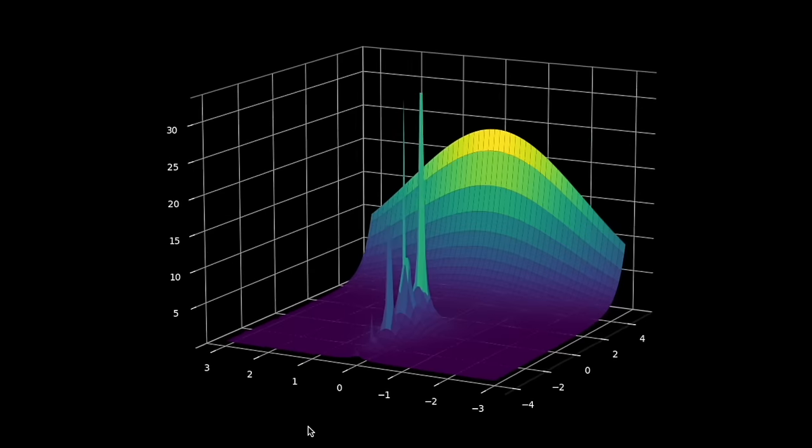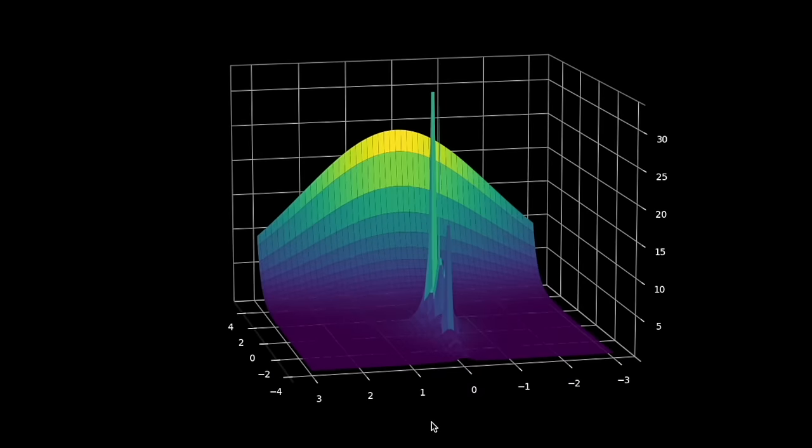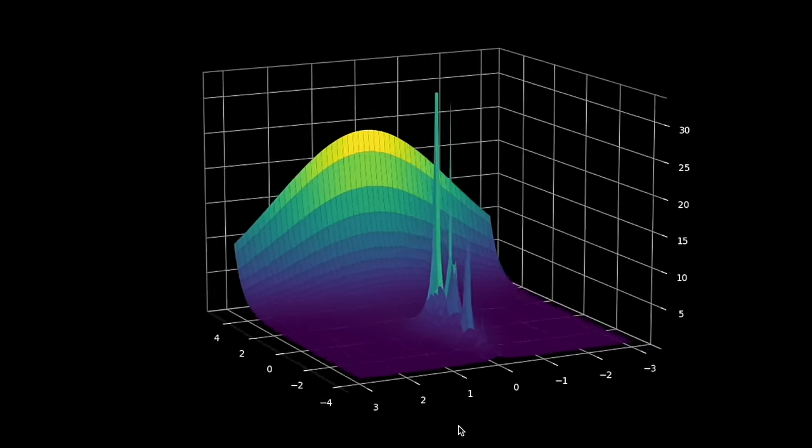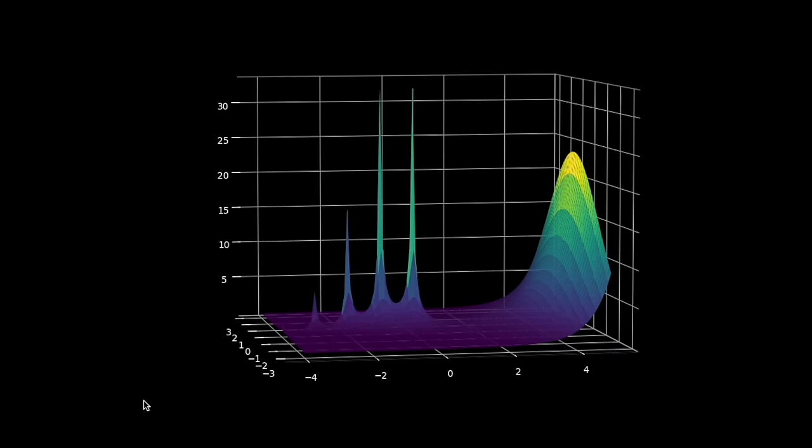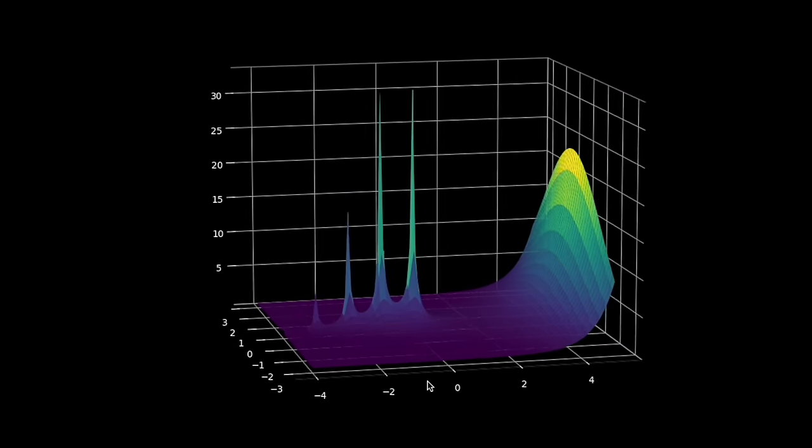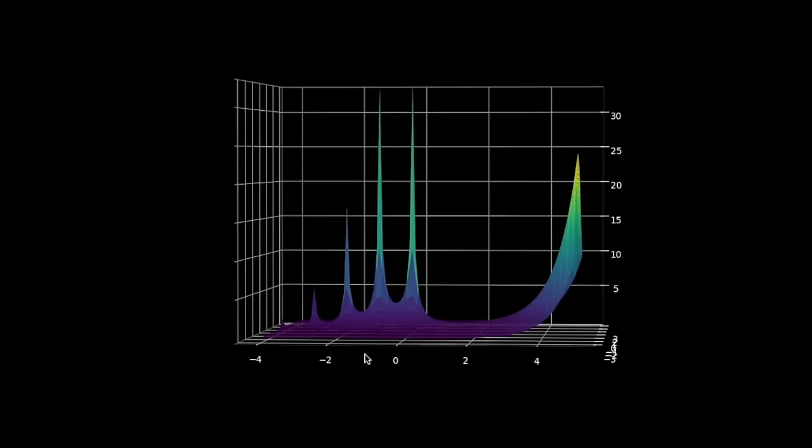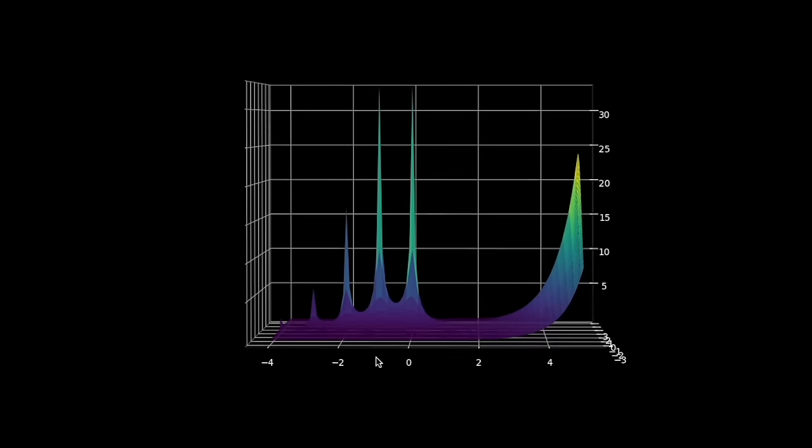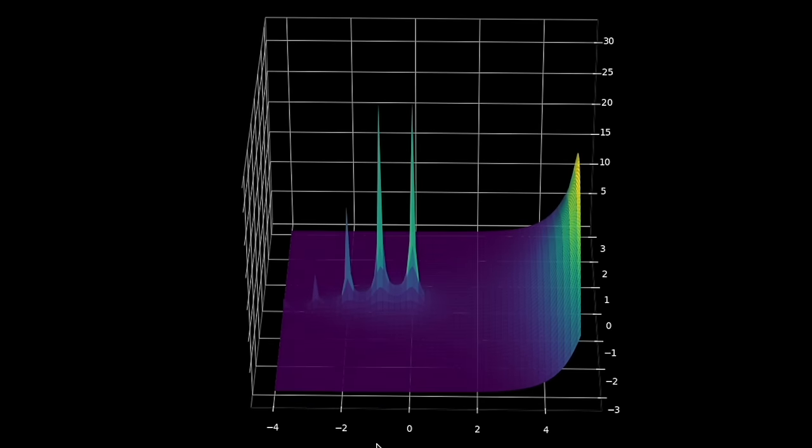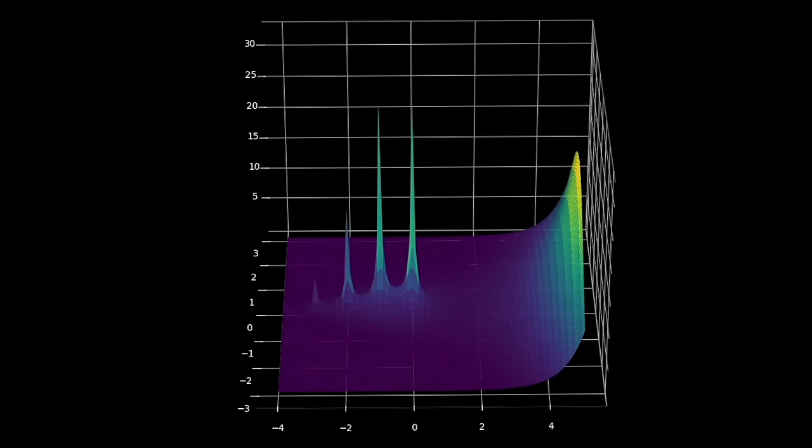And here we can clearly spot the poles. The poles where it soars to infinity. In fact, this function has poles at all negative integers, including the one representing negative one factorial. This is consistent with Wolfram Alpha's output.